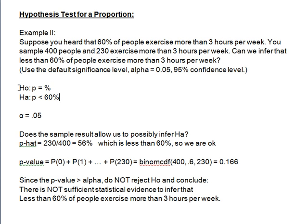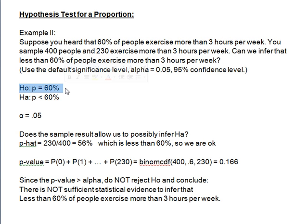The null hypothesis is the opposite of the alternative hypothesis and is the default conclusion. So the opposite of less than 60% is greater than or equal to 60%. I emphasize the equal part because we need to set the null hypothesis equal to something — that's a rule — so that we can anchor our assumption and calculate a p-value.